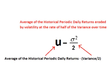We take the historical closing prices over a period of time, such as one year or the entire life of the asset. We find a periodic daily return for each day, then find the average of those periodic daily returns. However, we erode that average return rate based on volatility. The standard rate for return erosion is one half of the variance over time. Therefore, the drift is the average of the past periodic daily returns minus one half of the variance over time.